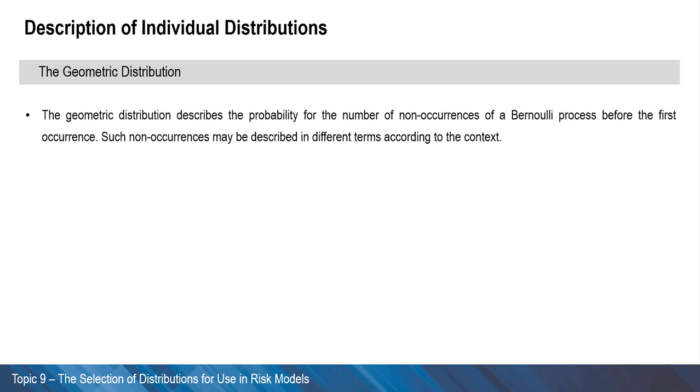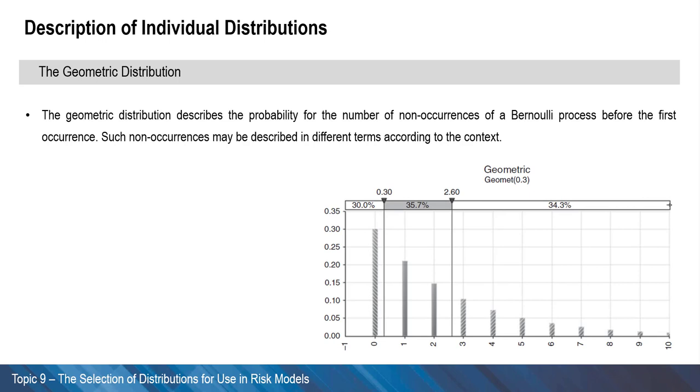The geometric distribution describes the probability for the number of non-occurrences of a Bernoulli process before the first occurrence. Such non-occurrences may be described in different terms according to the context.